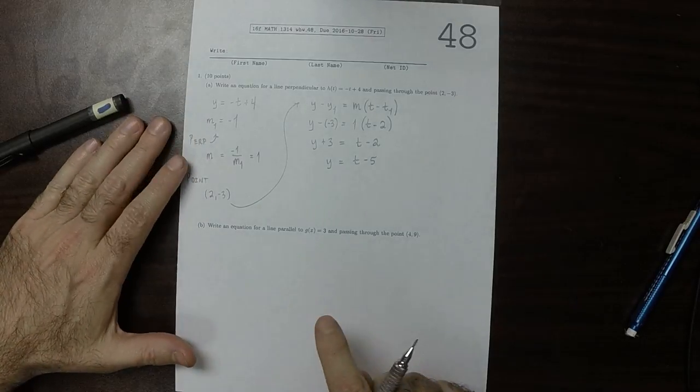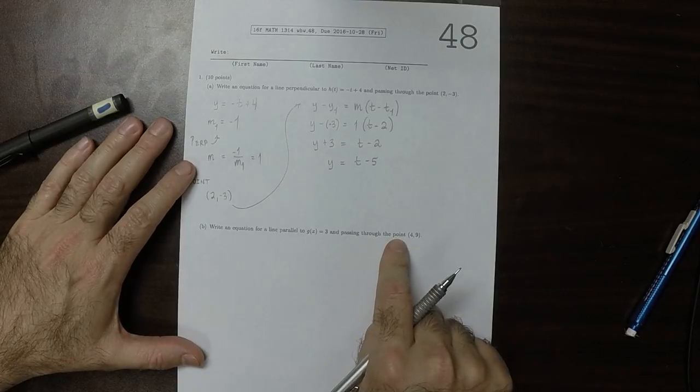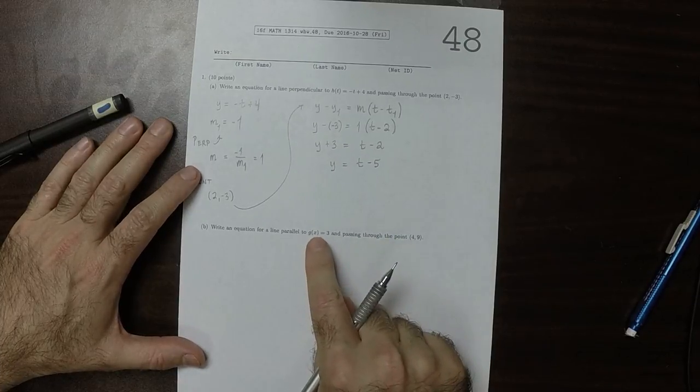A line parallel to this passing through the point 4, 9. Okay, well, this is a horizontal line.